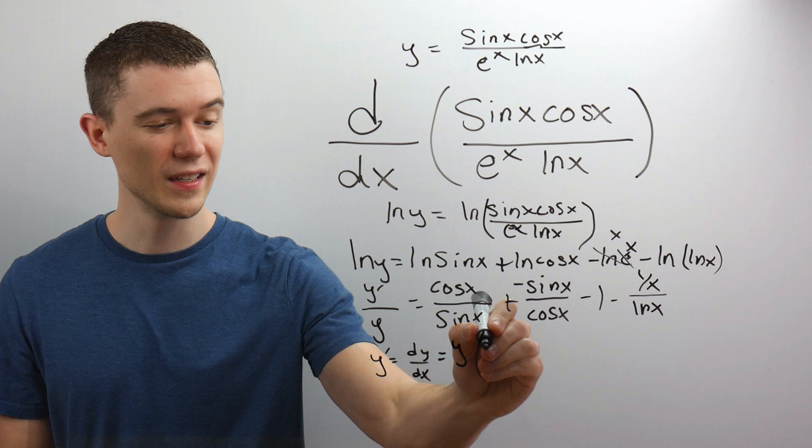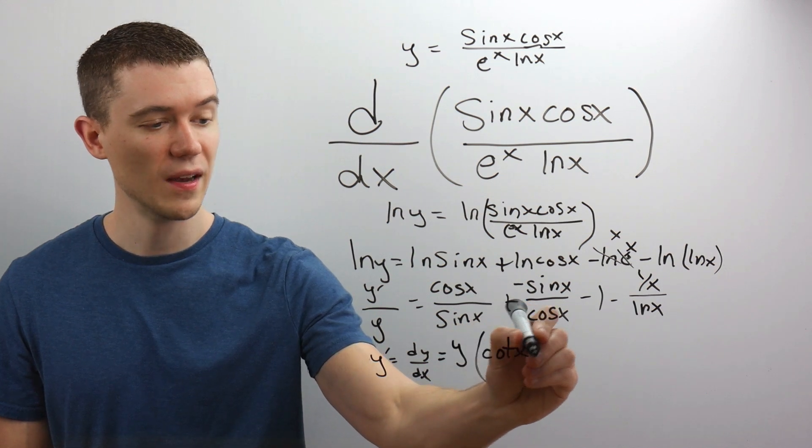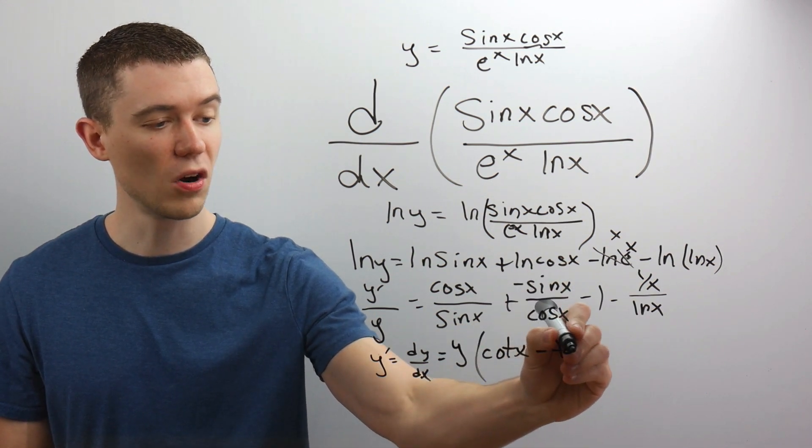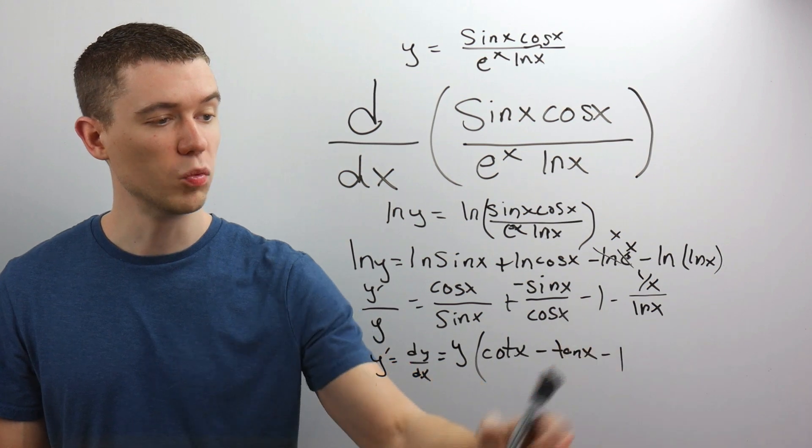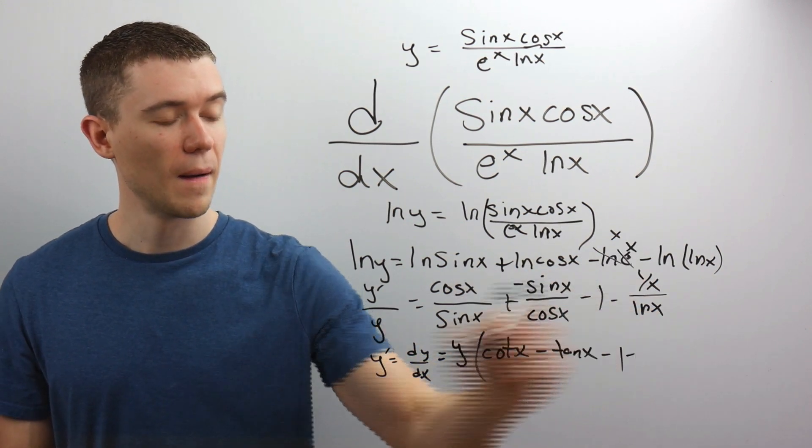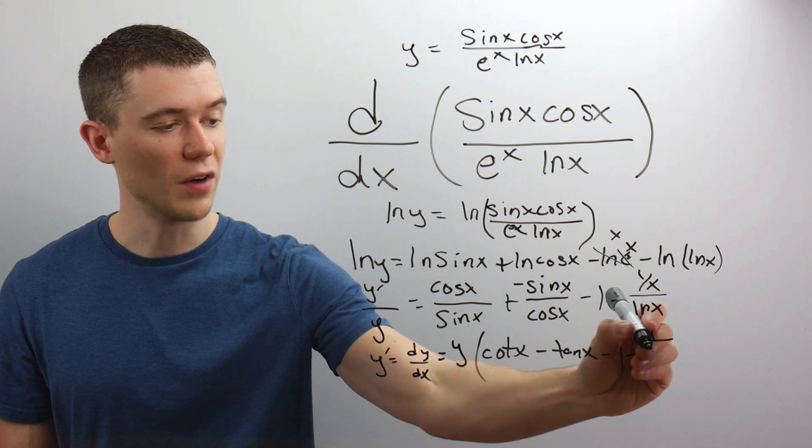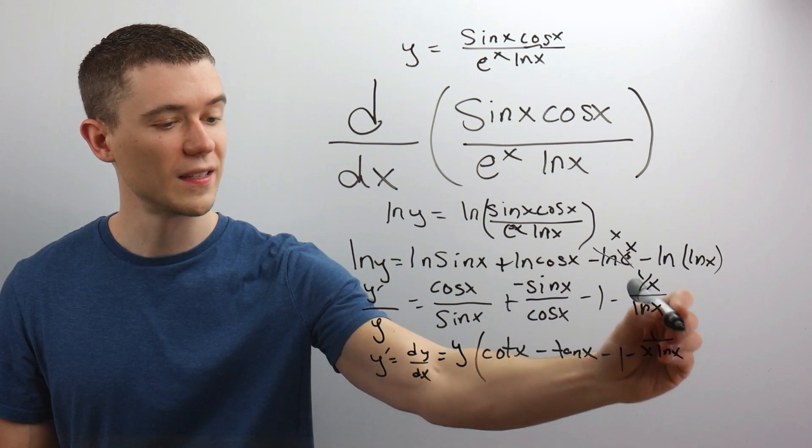Y times this. Cosine over sine. I'll call that cotangent. Minus sine over cosine. I'll call that tangent minus 1, 1 over x over lnx. Just think properties of fractions here. You could rewrite this.